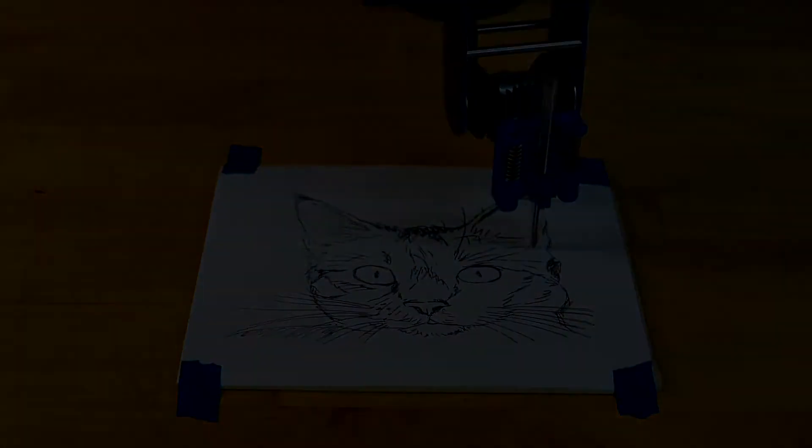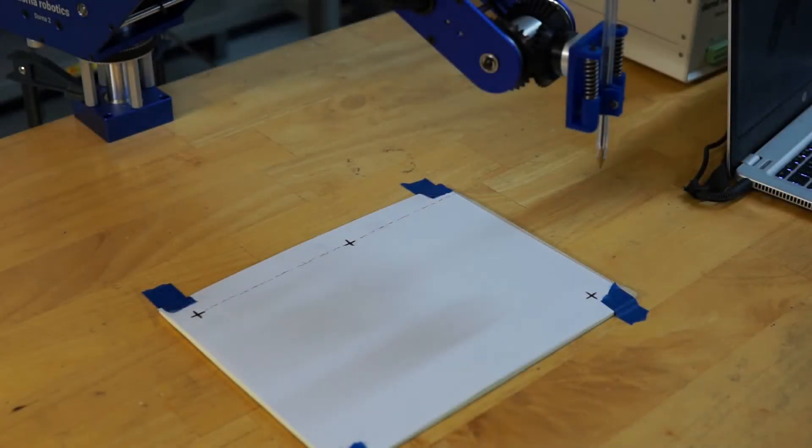In this video we will show you the Dornit 2's ability to draw an image from SVG file as well as the setup. Skip ahead to 1:53 in the video if you just want to see the robot draw the image.